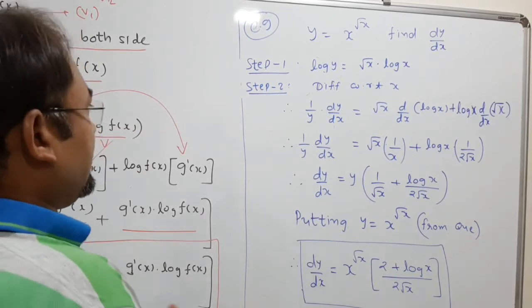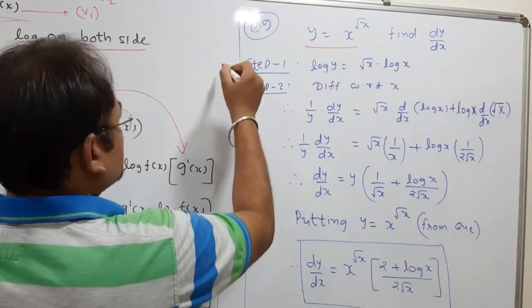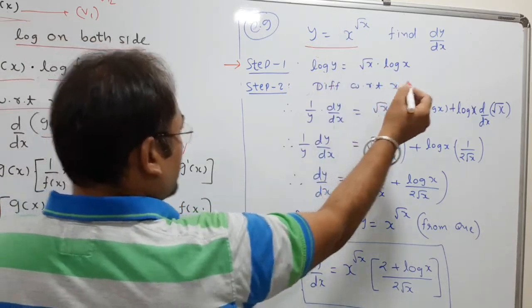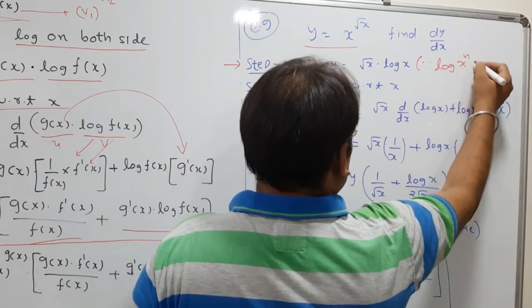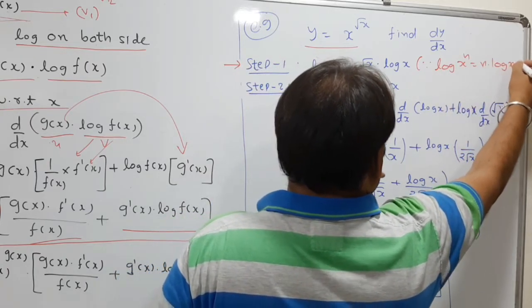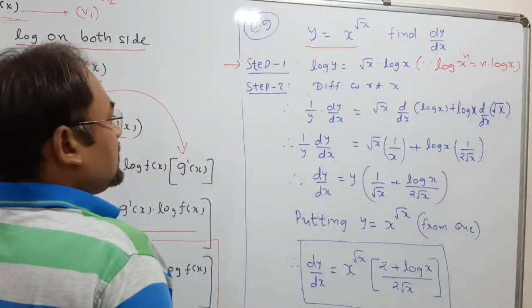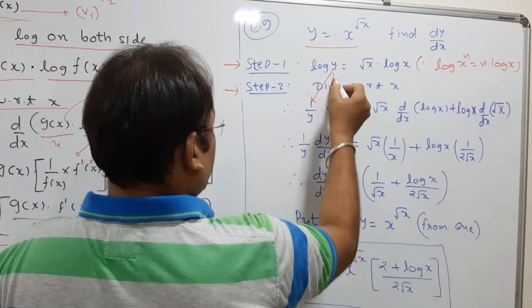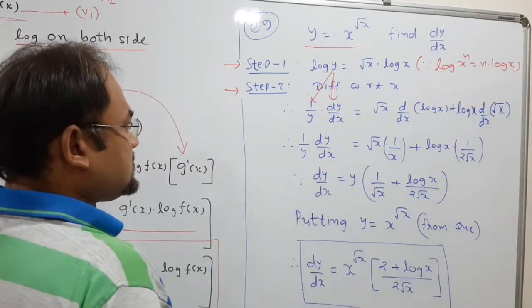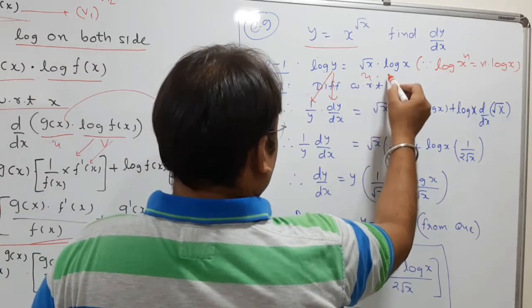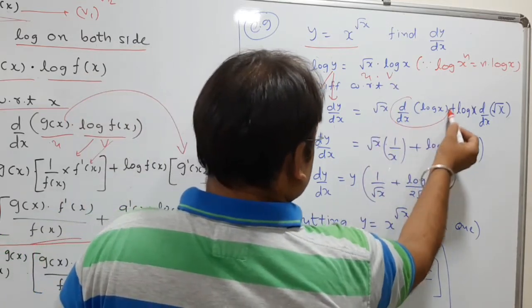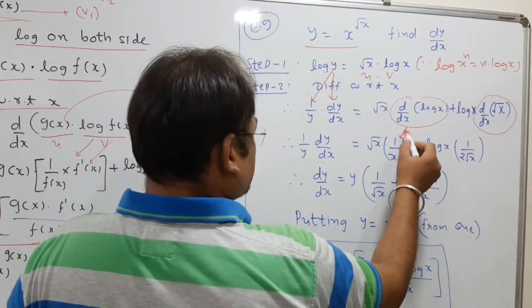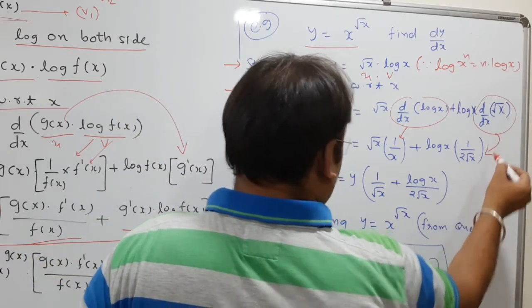Example 1: Find the derivative of y = x^(√x). Step 1 — apply log on both sides: log y = √x · log x (power gets multiplied). Step 2 — differentiate with respect to x: (1/y)·(dy/dx) = √x · (1/x) + log x · (1/(2√x)), applying the product rule on the right-hand side.